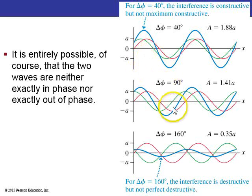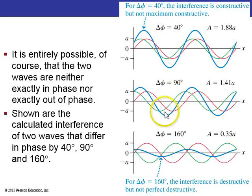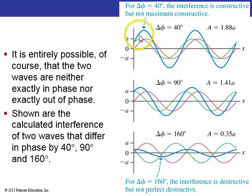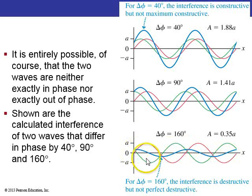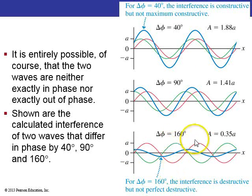Of course, it's possible that two waves are neither exactly in phase nor out of phase. They could be off by, say, 40 degrees, 90 degrees, or 160 degrees. In each case, you have the green line adding with the red line to form a sum, which is the blue line. This blue line could be somewhat constructive or somewhat destructive. But it's always a sine wave in the final answer, and its amplitude is determined by delta phi, the phase difference between the two summing waves.